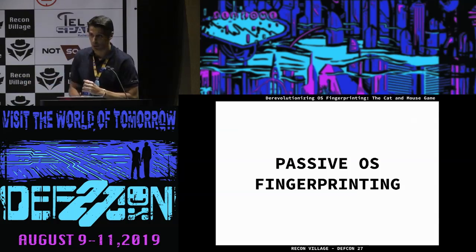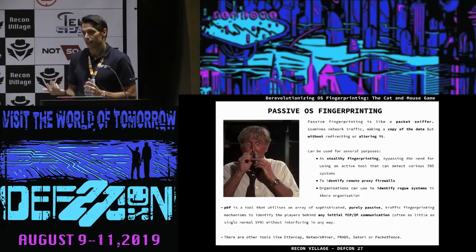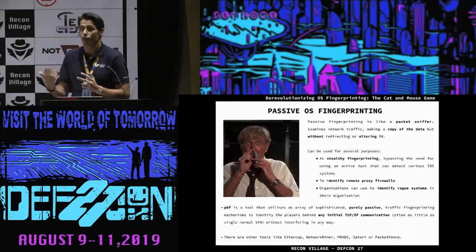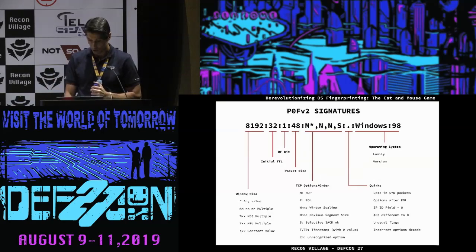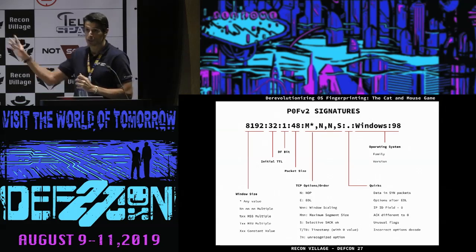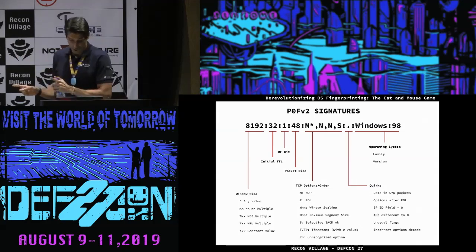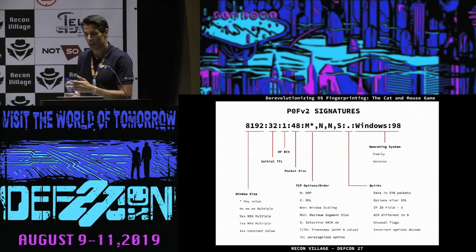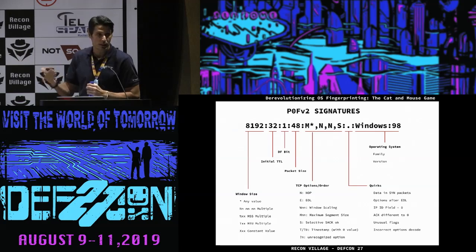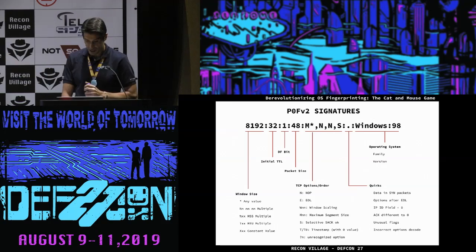For passive operating system fingerprinting, it's like dealing with a packet sniffer. What you're trying to do is copy data without modifying it. You don't manipulate the traffic — you just get all the information and try to analyze it locally to get as much information as you can about the remote host. OS Fueler can handle all the information from the p0f database version 2. Every line has the window size for the TCP/IP stack, time-to-live, whether the default fragment flag is on, TCP options in order, and some quirks.